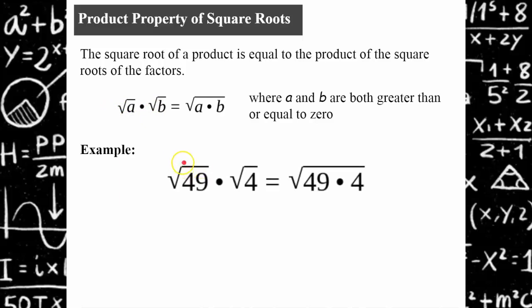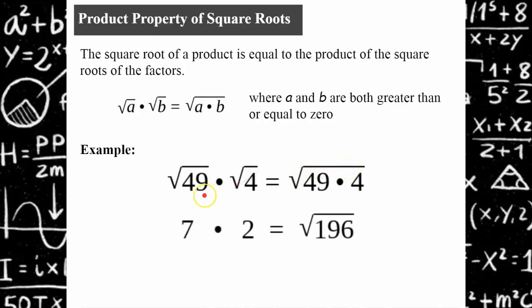An example: the square root of 49 times the square root of 4 is equivalent to the square root of 49 times 4. That gives 7 times 2, which is 14. Multiplying the radicands gives 196, and the square root of 196 is also 14.